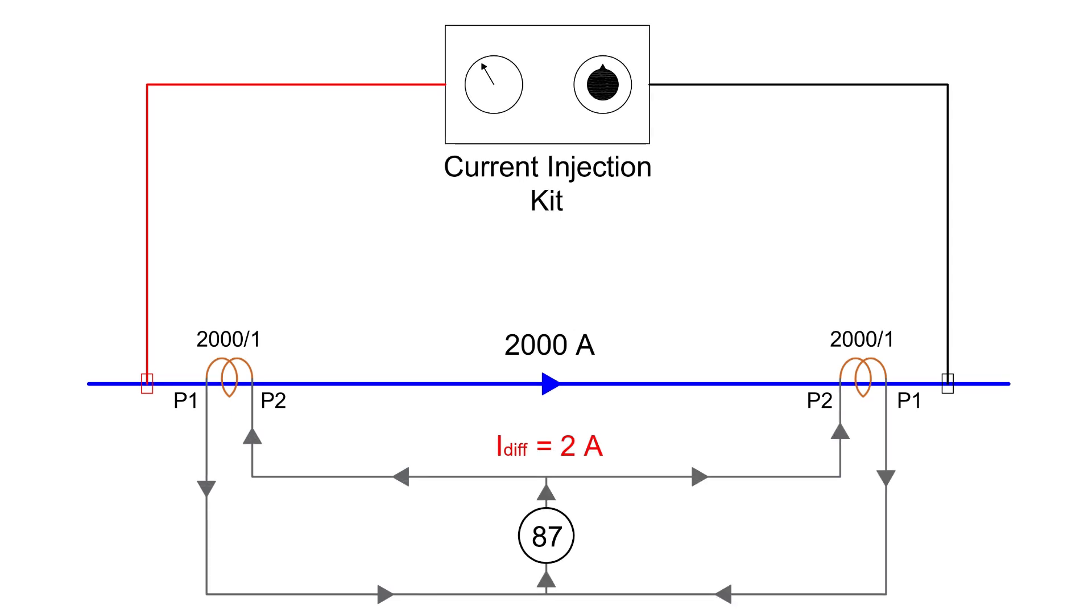However, if the differential current is equal to the sum of the individual CT secondary currents, it means the CTs are connected with the wrong polarity. This allows us to take corrective action before the system goes operational, preventing unnecessary tripping and ensuring the reliability of the protection system.